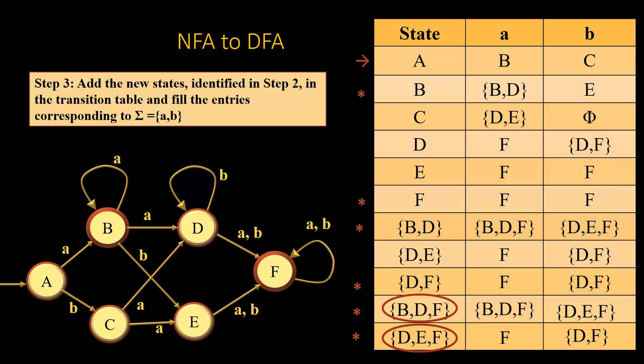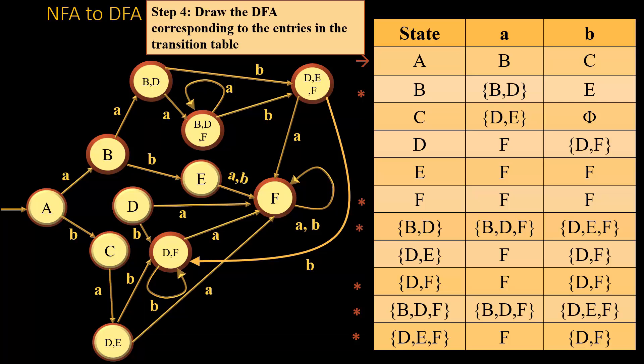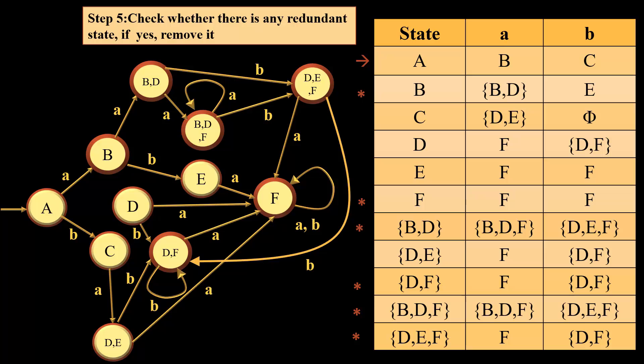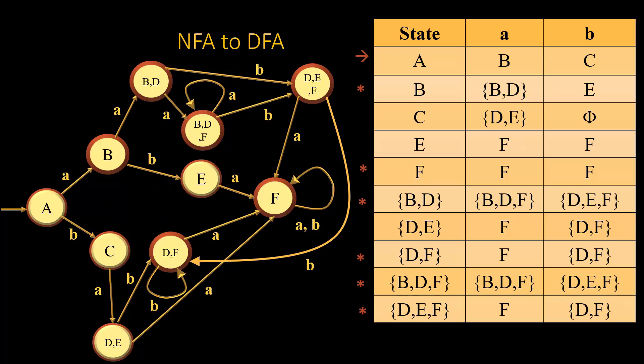Since there are no new states, we draw the DFA corresponding to the transition table. The resulting DFA is shown on the left. After drawing the DFA, we check for redundant states. We can easily identify that {D,E} is redundant since there is no incoming move to {D,E} — only two outgoing moves. We remove state {D,E}, and this is the final DFA obtained from the given NFA.